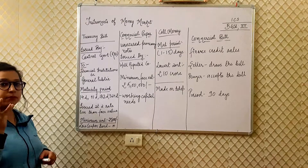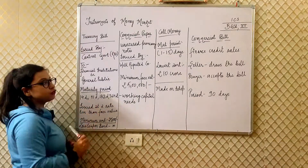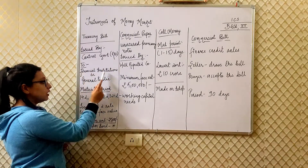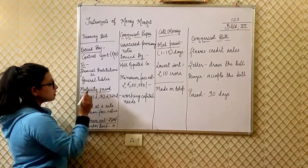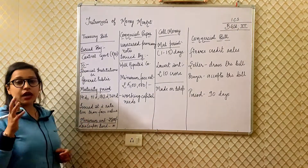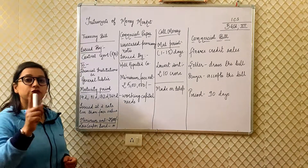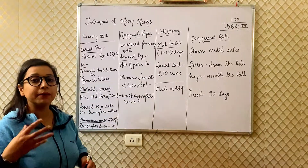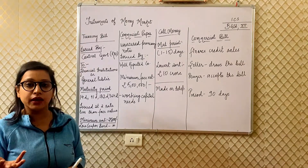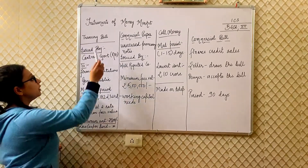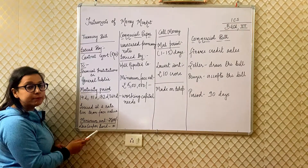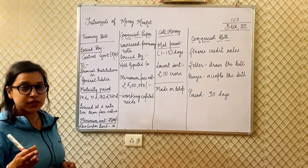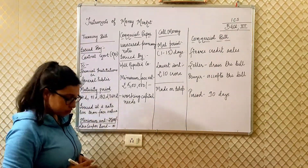When you come back to redeem the bill, you get back the full face value. The amount you will receive back is fixed, but the purchase price is not fixed, meaning the interest rate is not certain. That is why treasury bill is also known as zero coupon bond — because its rate of interest is not fixed. This is the first instrument of money market.